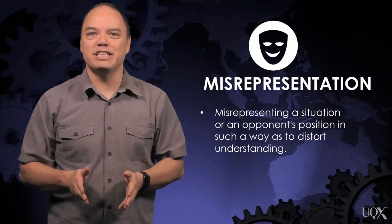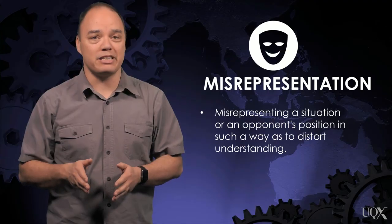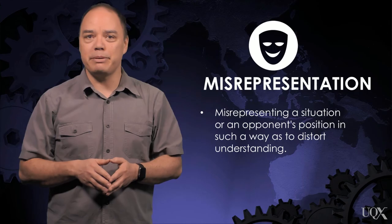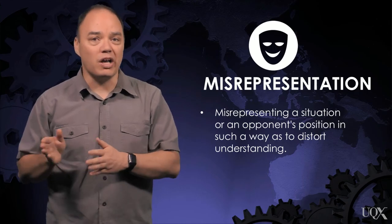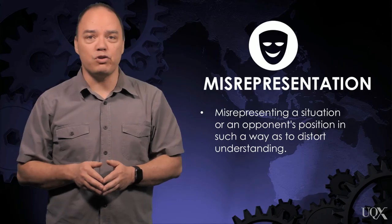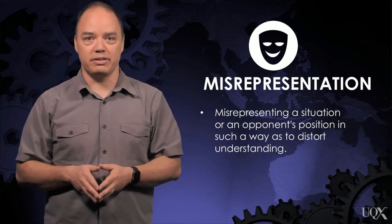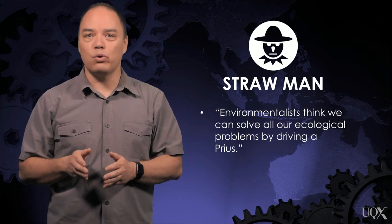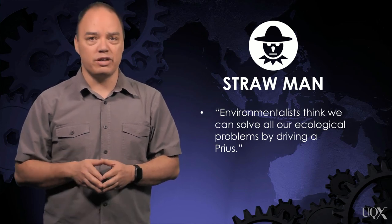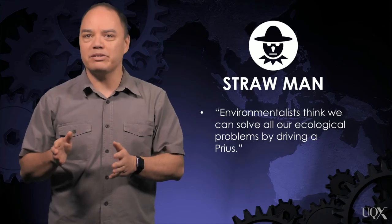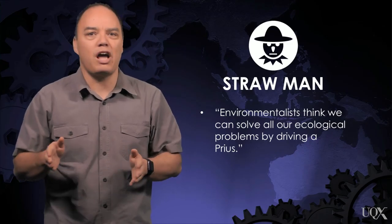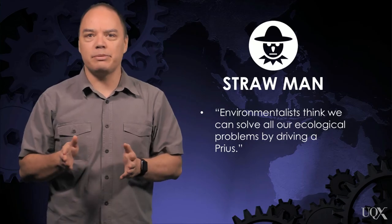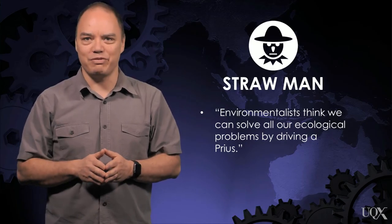Another logical fallacy is misrepresentation, which involves misrepresenting a situation in order to mislead people. Sometimes this can be misrepresenting a situation or the science, but the most common form of misrepresentation is the straw man argument. This is where an opponent's position is misrepresented in order to make it easier to refute. For example, arguing that environmentalists think all we have to do to solve climate change is drive electric cars oversimplifies the environmentalist position to make it easier to refute.